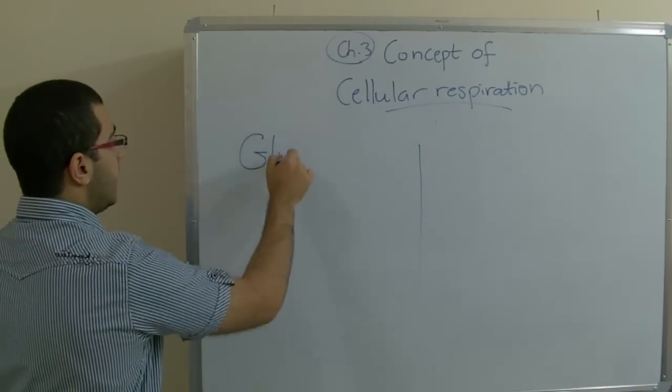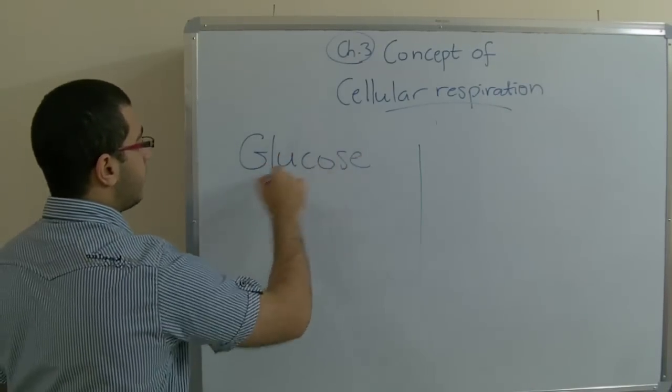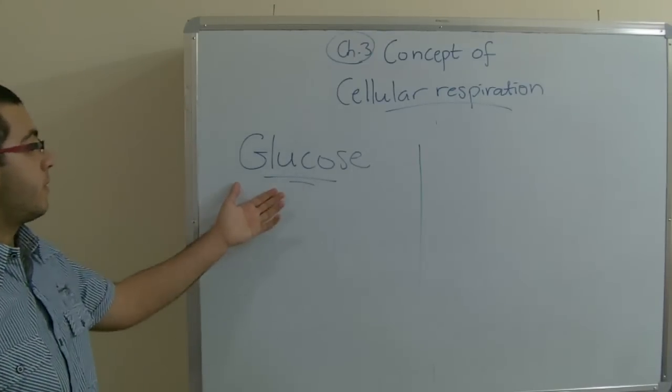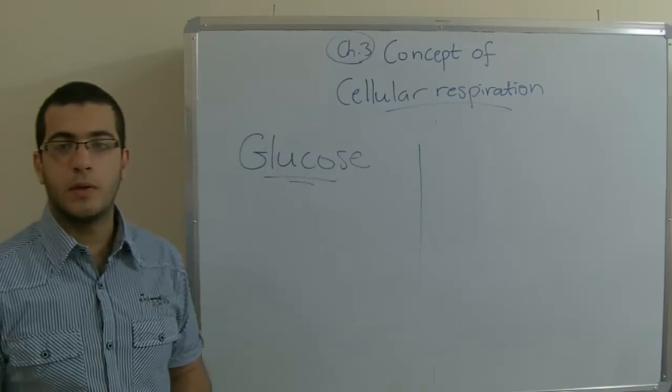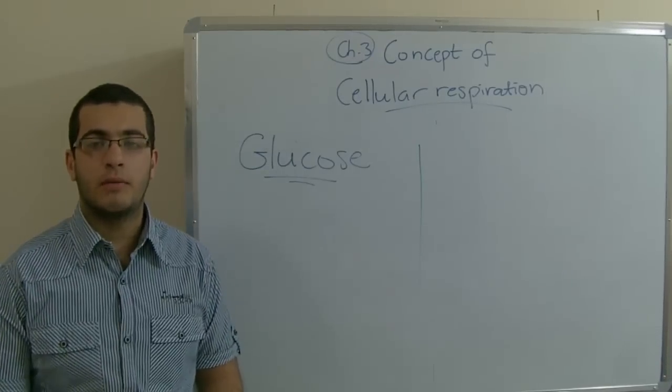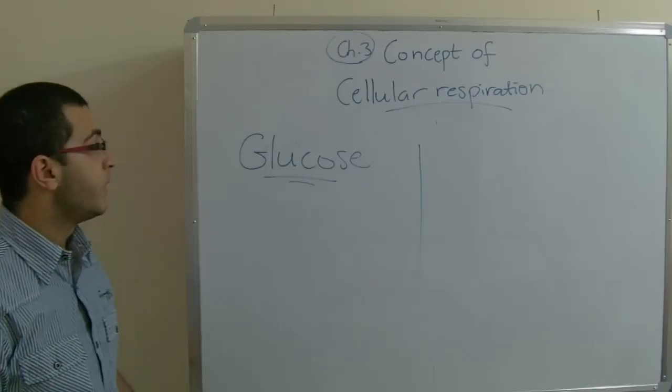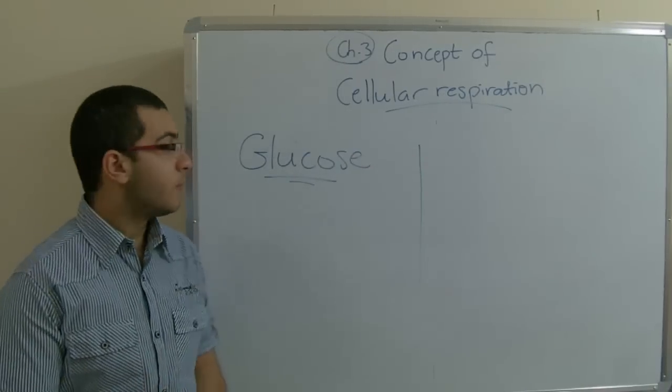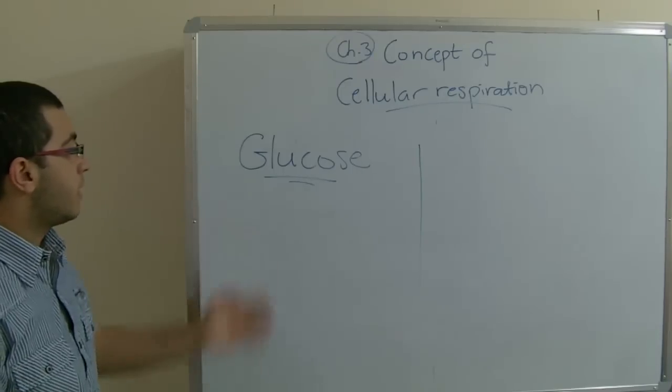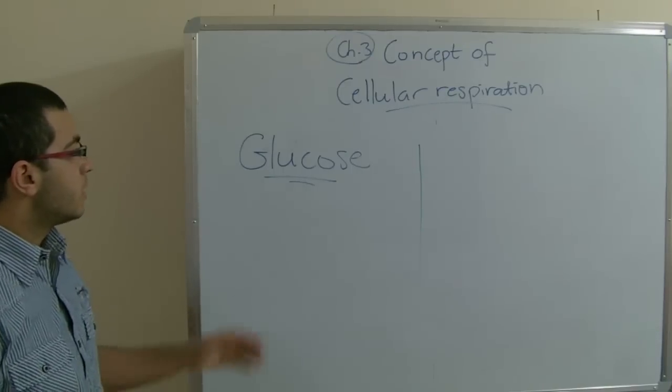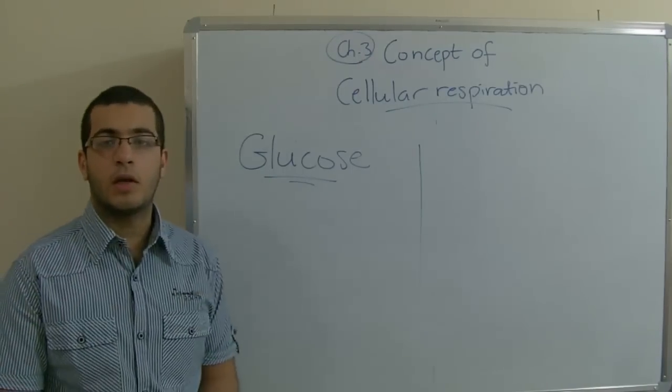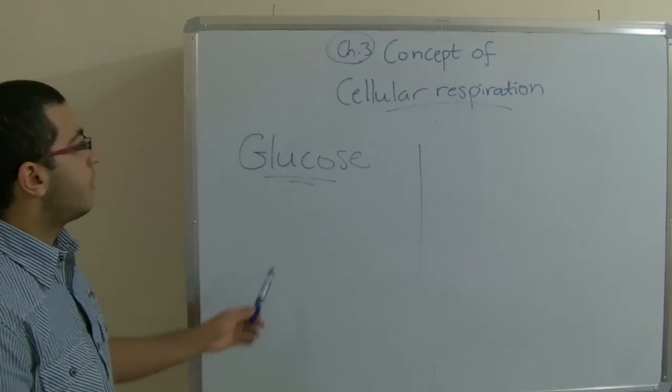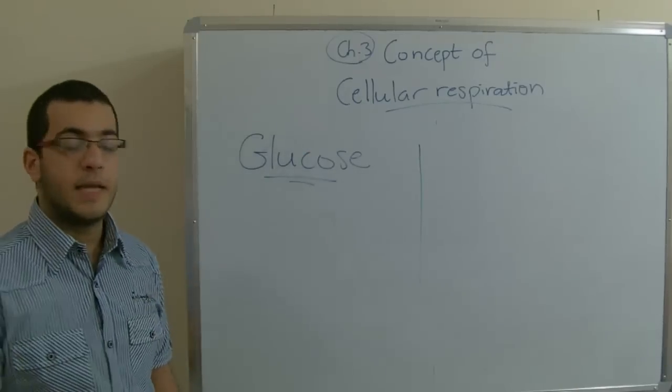So we have the glucose molecule. Glucose molecule is an excellent example to study the cellular respiration on because the glucose molecule is used by the majority of the living organisms in order to carry out the cellular respiration for the vital activities. So we are going to deal with the glucose molecule in the next videos to know how the cellular respiration takes place.